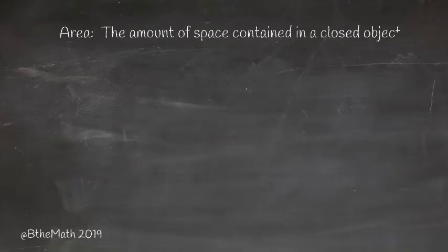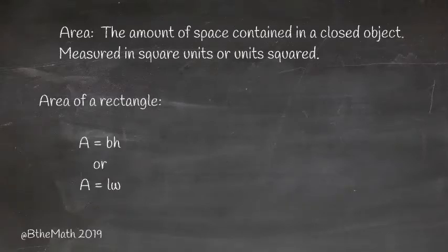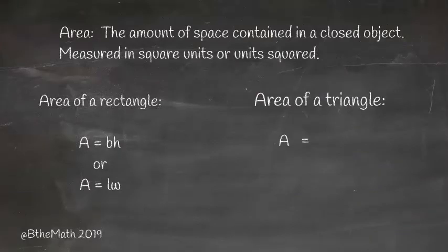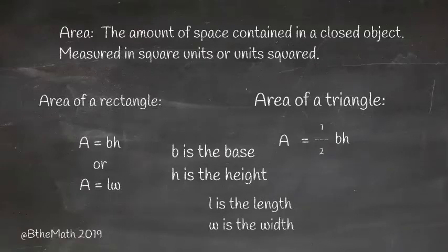Area is the amount of space contained in a closed object. It's measured in square units or units squared. The area of a rectangle is base times height, or length times width. The area of a triangle is one half base times height. B is the base and H is the height, where L is the length and W is the width of the shape.